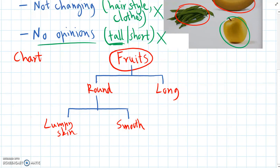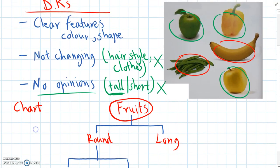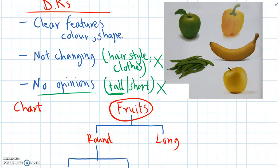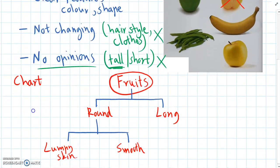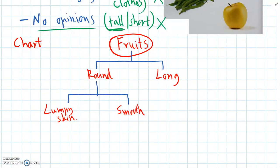And now, the yellow capsicum is the only one that has lumpy skin and is round. So we finish classifying the yellow capsicum. And we can write that down at the bottom of the branch here. Round, lumpy skin is the yellow capsicum.